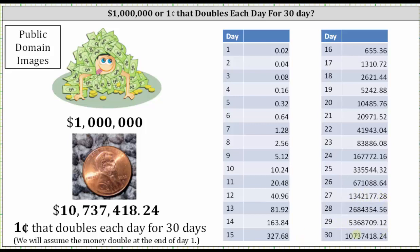And then finally, after 30 days of doubling, the total balance is $10,737,418.24, which is more than 10 times one million dollars.